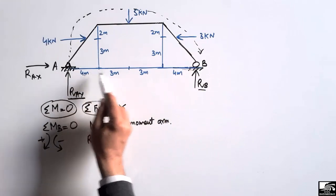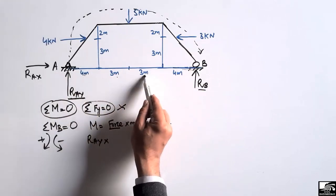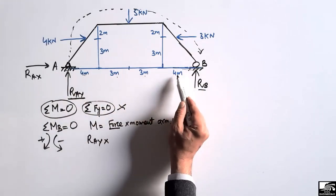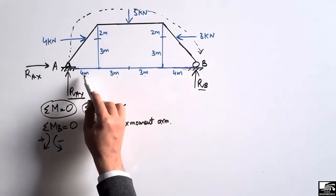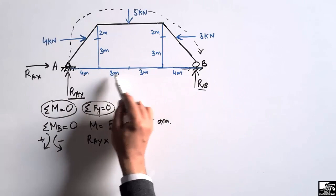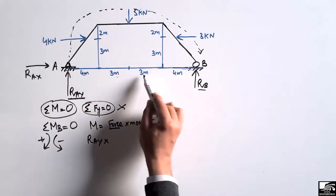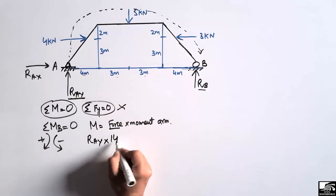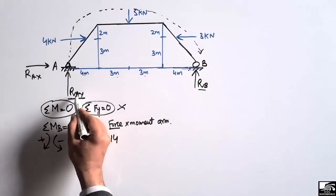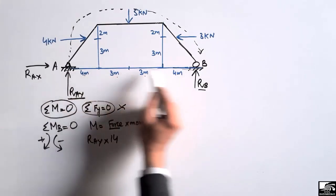The moment arm is 4 meters plus 3 meters plus 3 meters plus 3 meters plus 4 meters — but calculating correctly, the total distance is 4 plus 3 plus 3 plus 4, which gives us the total moment arm for R_AY as 14 meters. So the moment contribution is R_AY multiplied by 14.